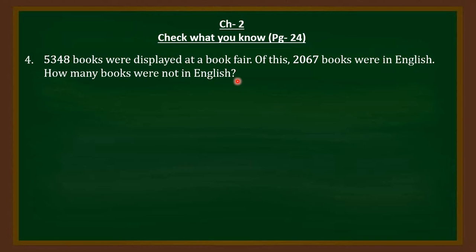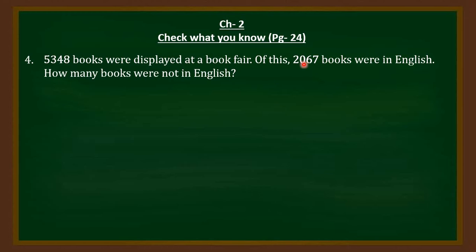Now kids, you are given that the total number of books in the book fair were 5,348. And out of that total number, 2,067 books were in English, and they are asking you to find out the number of books which are not in English. So that means when you subtract the books which are in English from the total number, you will get the books which are not in English.